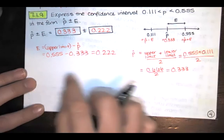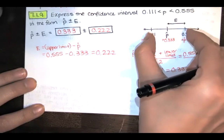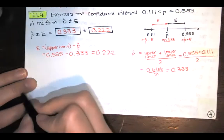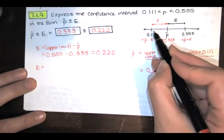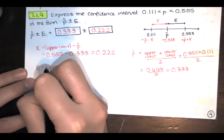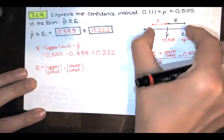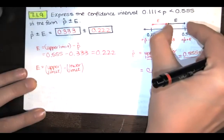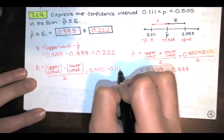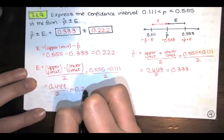Now the formula that they use in your book is that they say we want the error which is half of the length of that interval, because if this is the error and this is the error, this distance from here to here is two times the error. So they say you should do it this way: you should take the largest value minus the smallest value, so the upper limit of your confidence interval minus the lower limit of your confidence interval. So you take those and that's going to give you that difference, but we don't want the whole difference, we want half of that so we divide by two. And so we could do 0.555 minus 0.111 divided by two which gives us 0.444 divided by two which gives us 0.222.